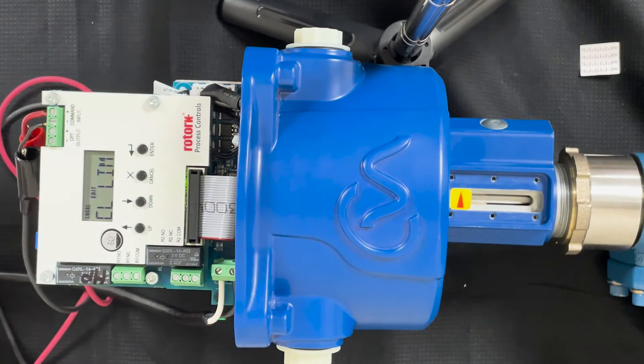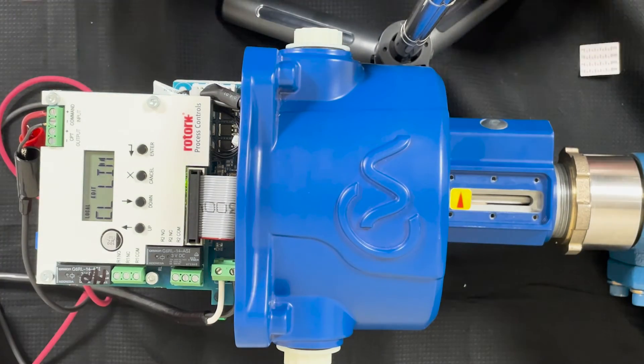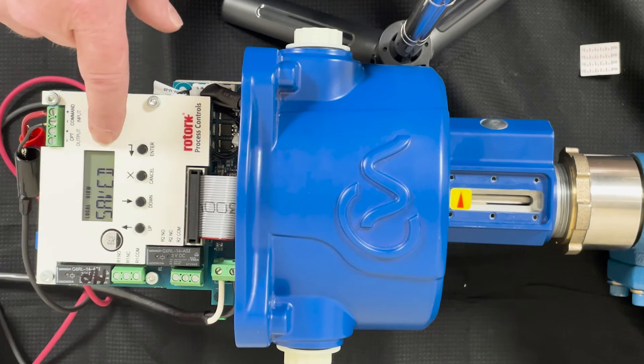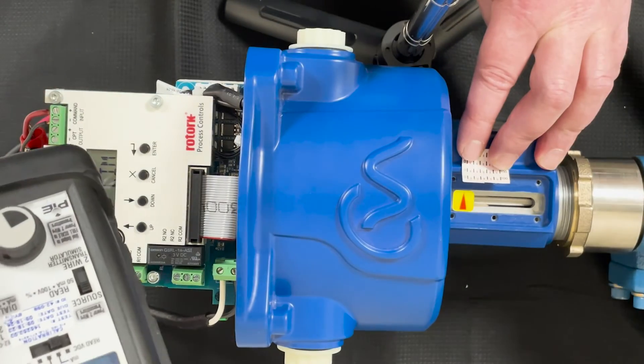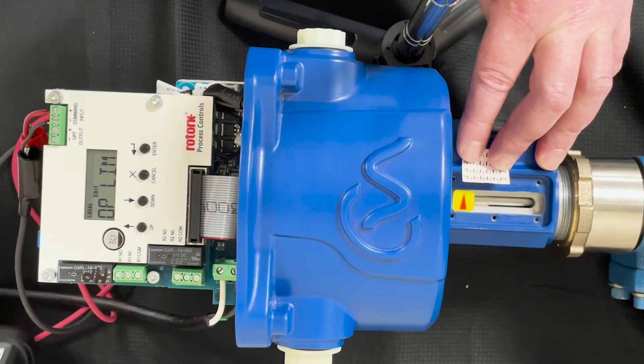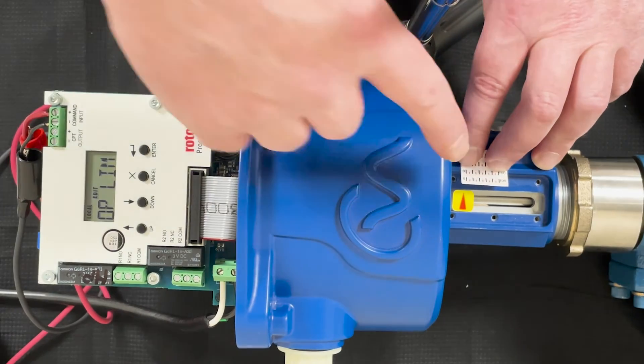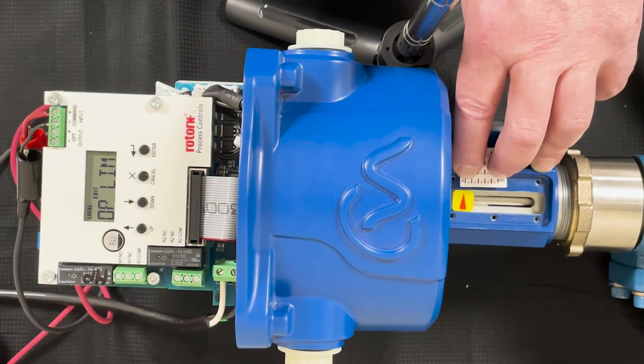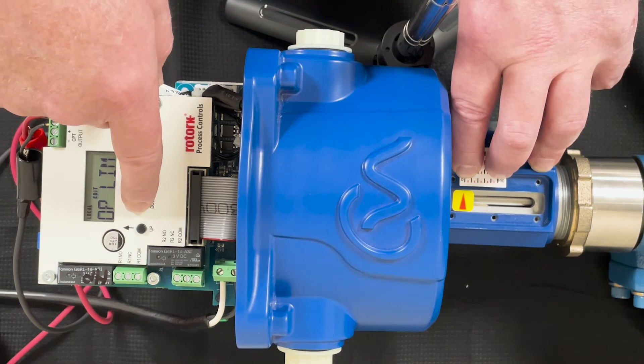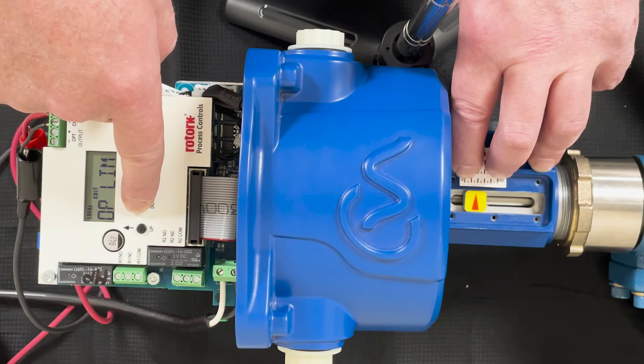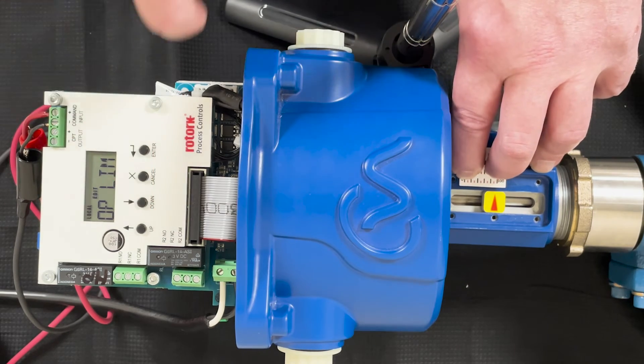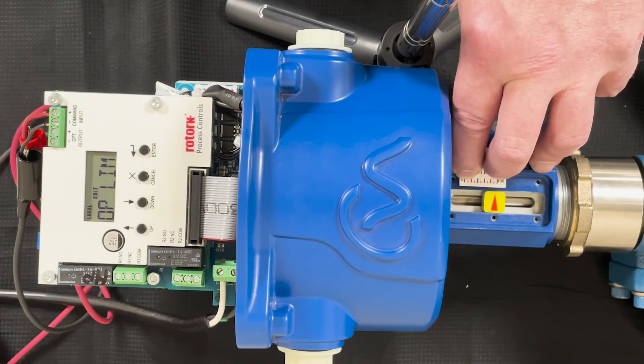We've got the 20 milliamp signal on the controller. Now we want to adjust over here to our 100 spot. We already did the zero, so we want to push our down button until we reach the 100 percent. Once you're at that 100 percent, we can save it.